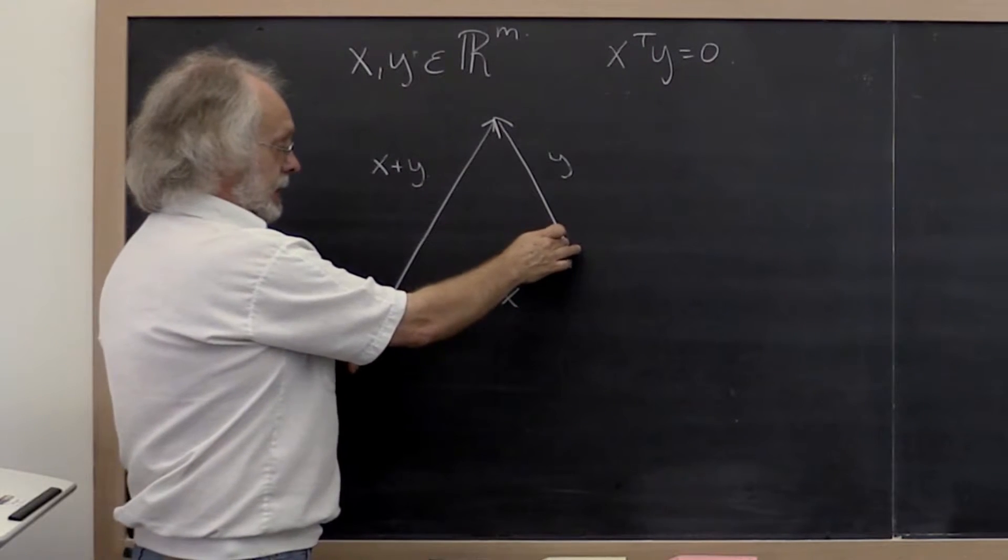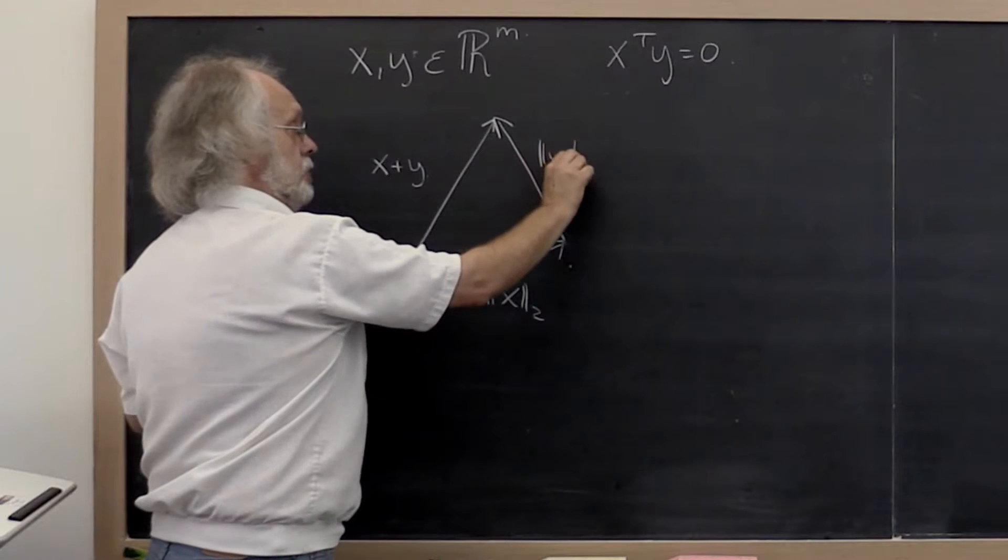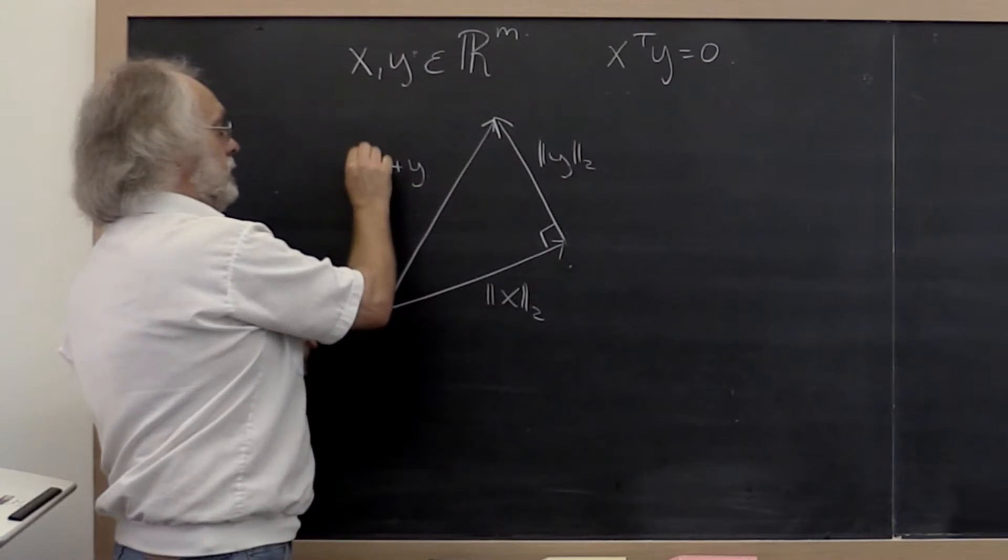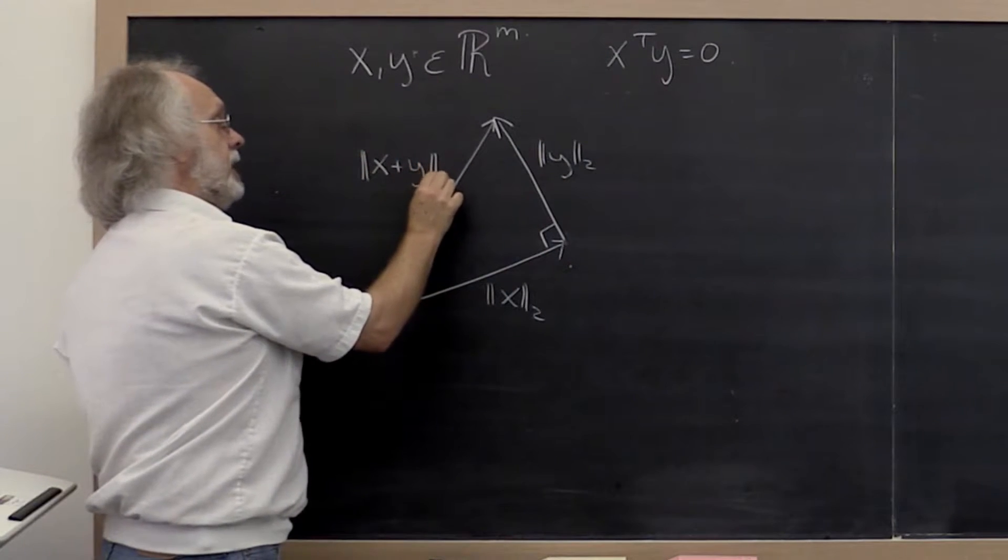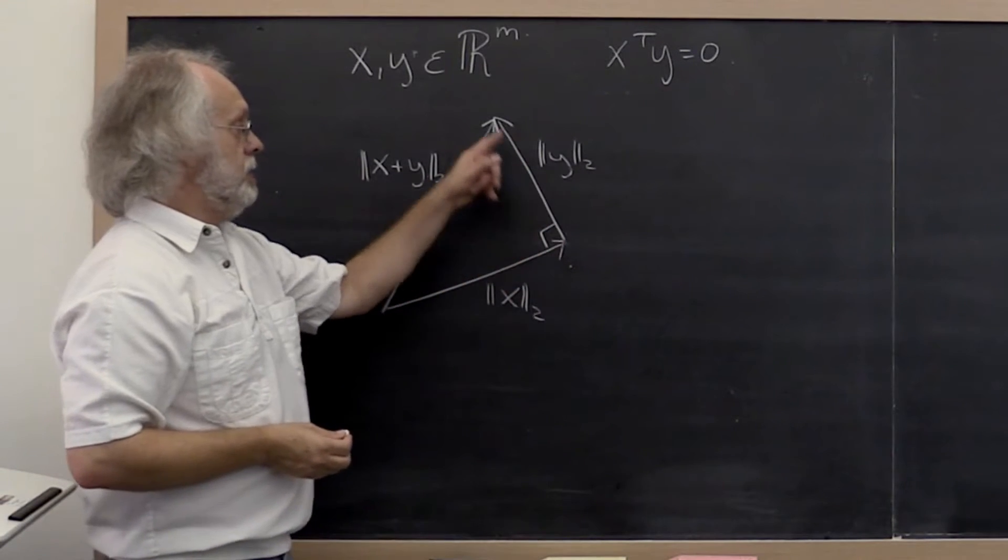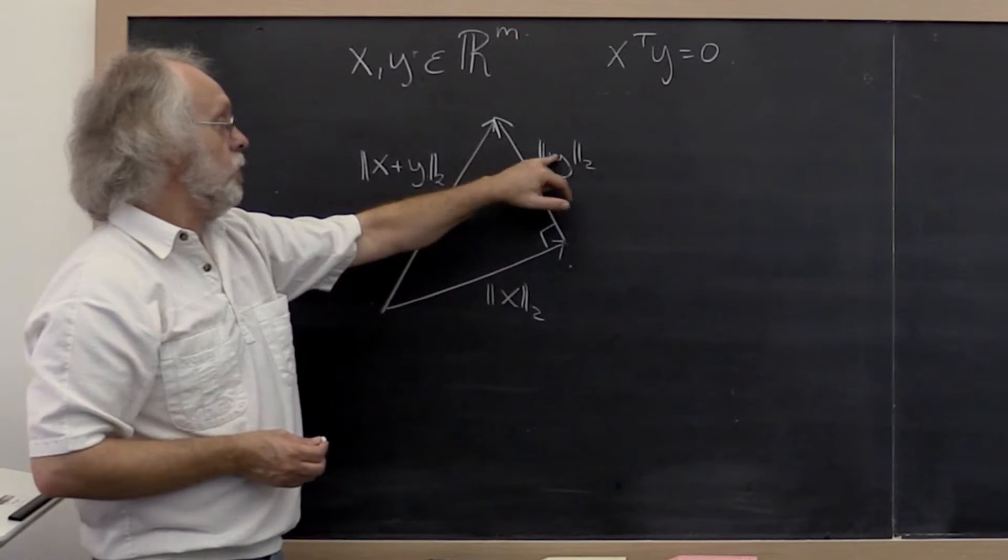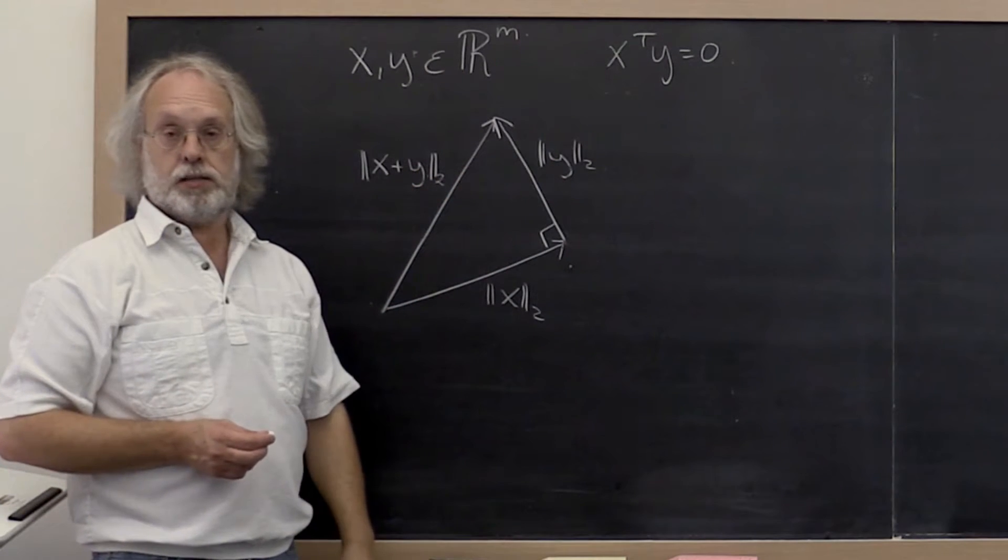And therefore the length of this is given by the two-norm of x. This is the two-norm of y. And this is the two-norm of x plus y. Now if this is a right triangle, then we know that this squared plus that squared must be equal to that squared.